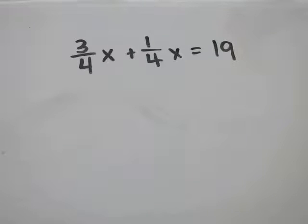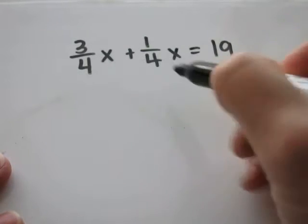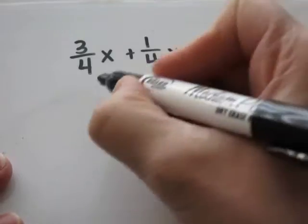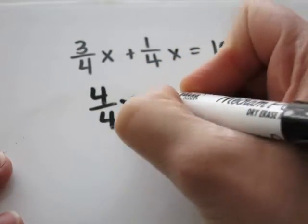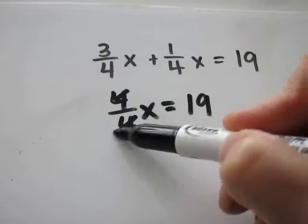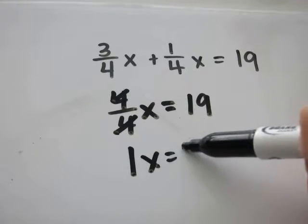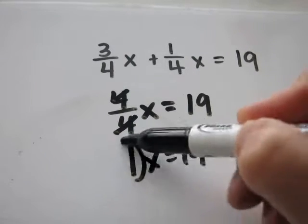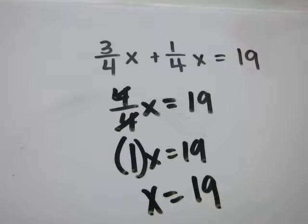Problem 23, 3 over 4x plus 1 over 4x equals 19. We're going to add the coefficients of x. And it's nice because they've already given us the common denominator. 3 plus 1 is 4. That's over 4. x equals 19. The 4's cancel out, and you're left with 1x equals 19. This 1 is a ghost number. So your answer is 19.